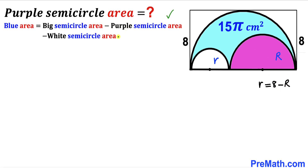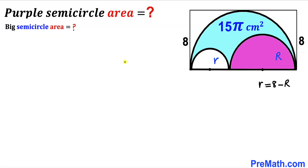Now let's make an observation. The blue shaded area is equal to the area of the big semicircle minus the area of the purple semicircle, minus the area of the white semicircle.